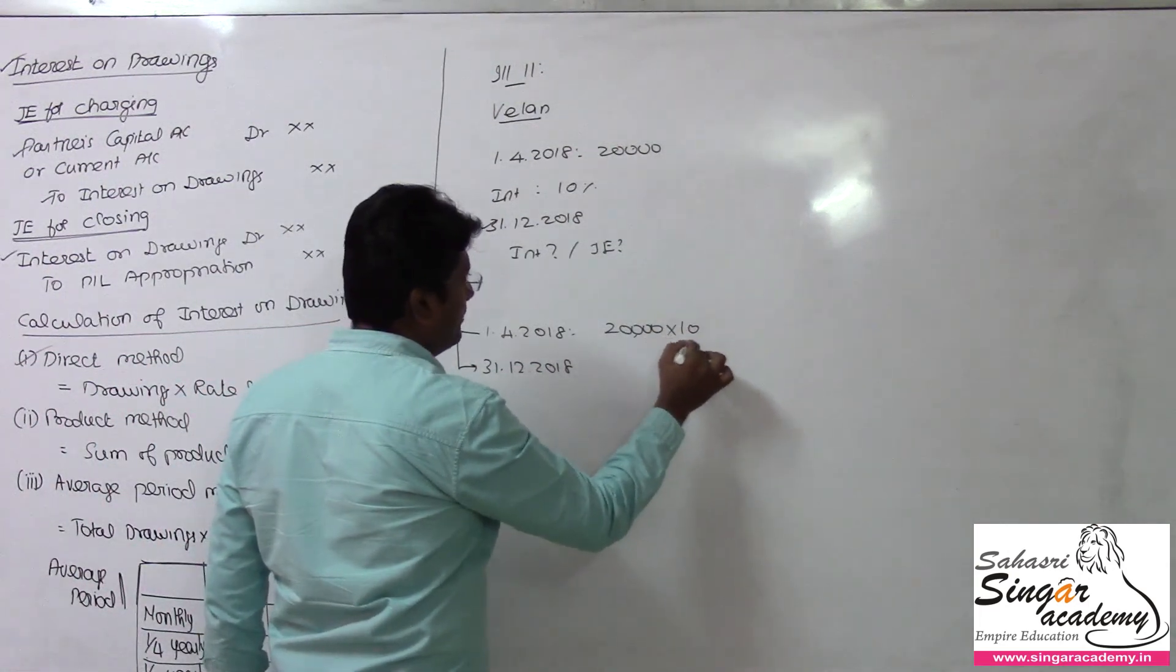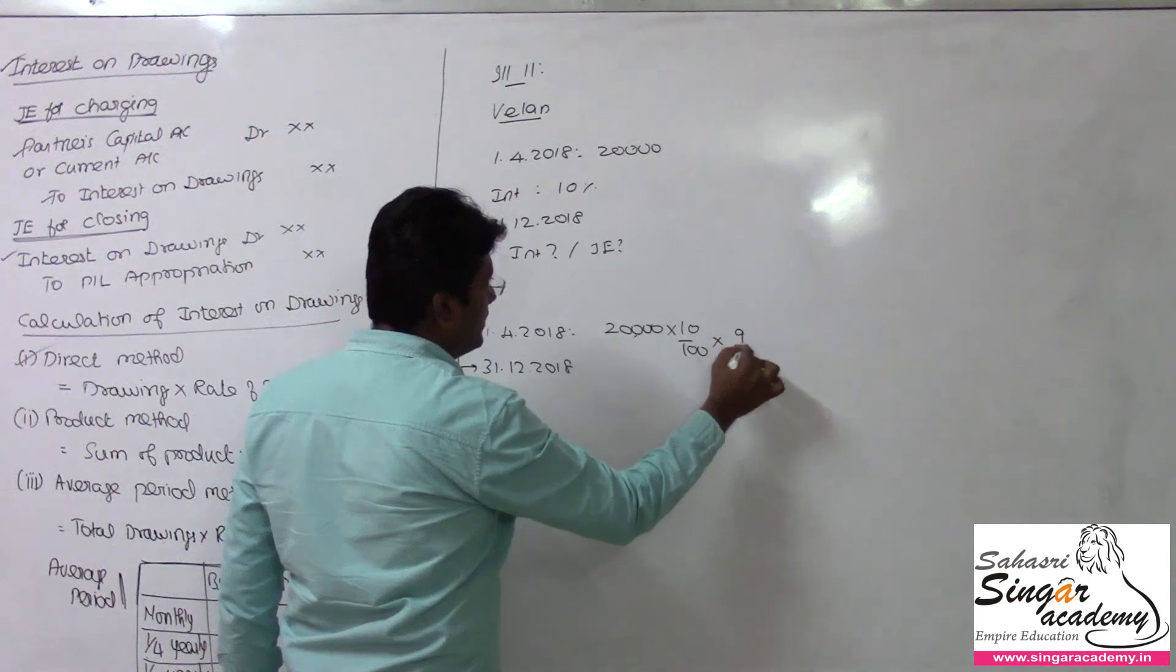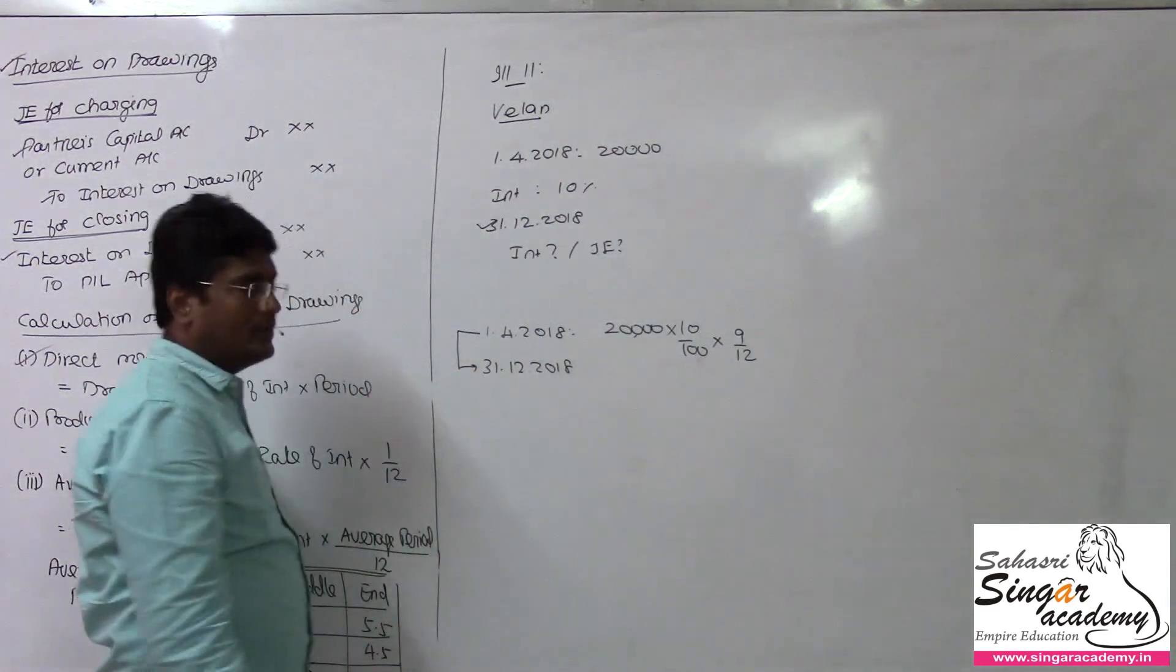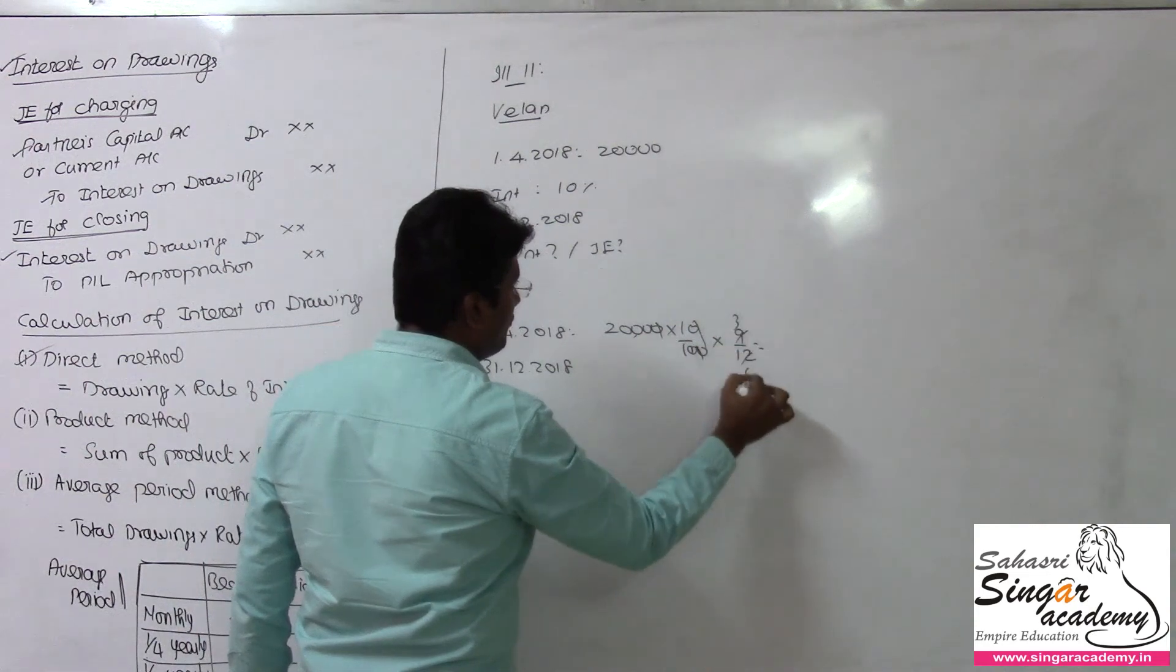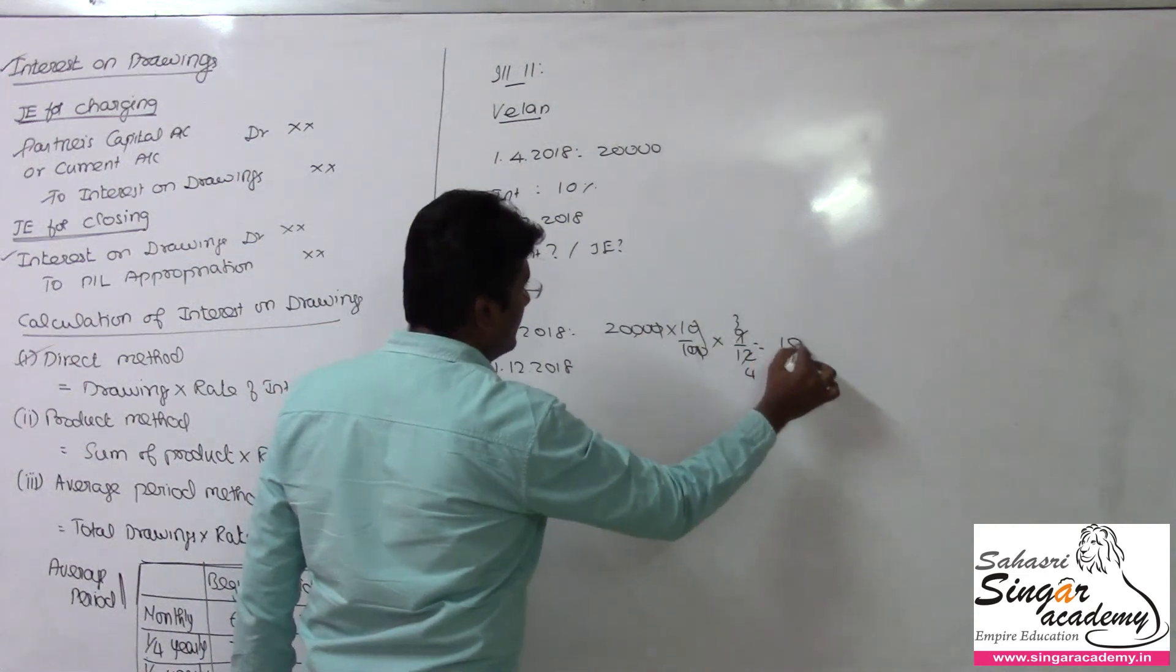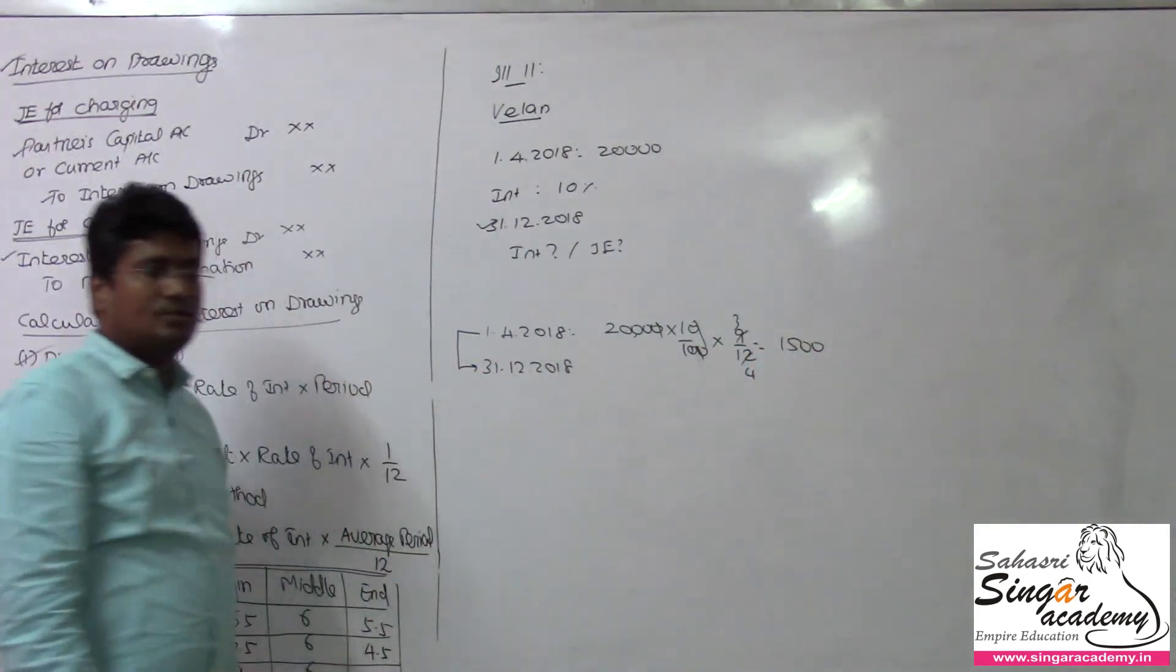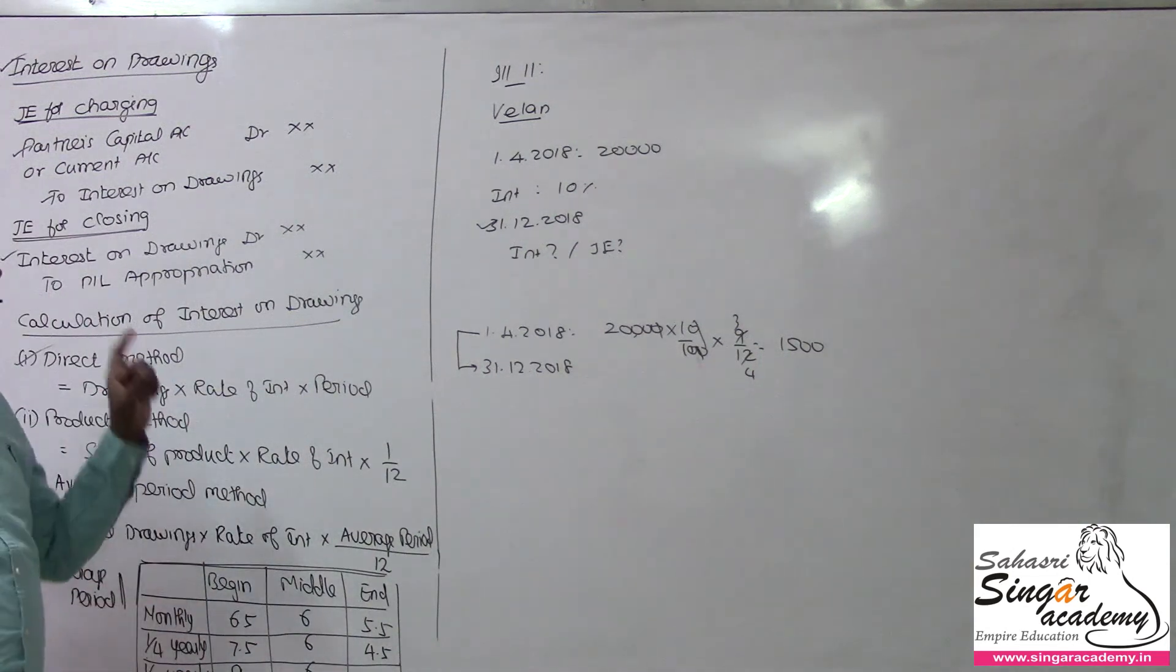So we have 9 months. Rate of interest being 10% into 9 by 12. You can calculate the exact value here. 3 by 4, and 1500 will be the interest on drawings for Velen.